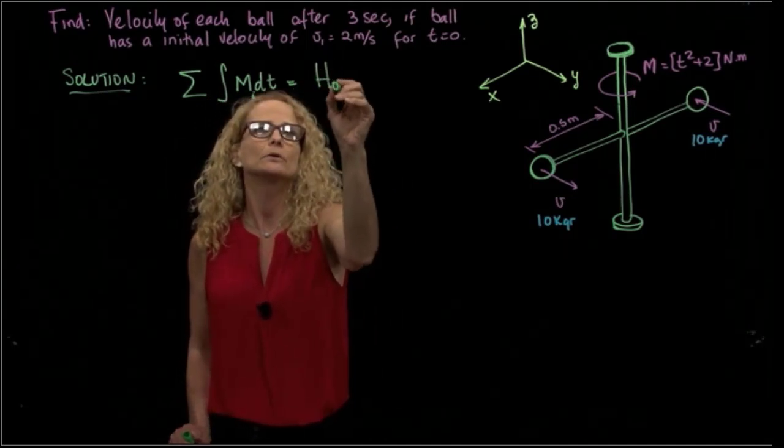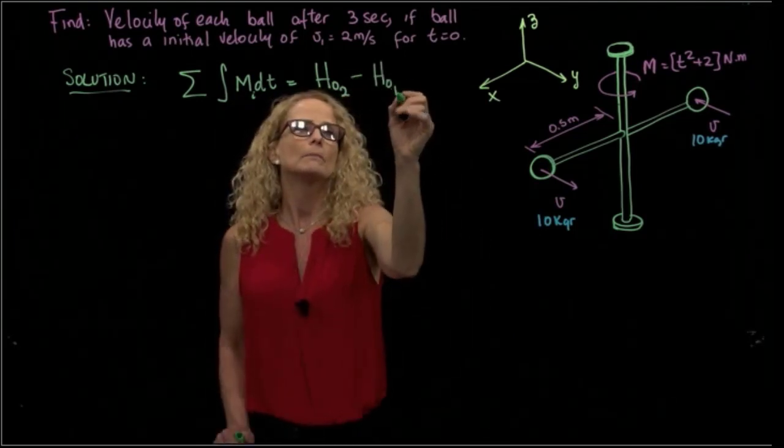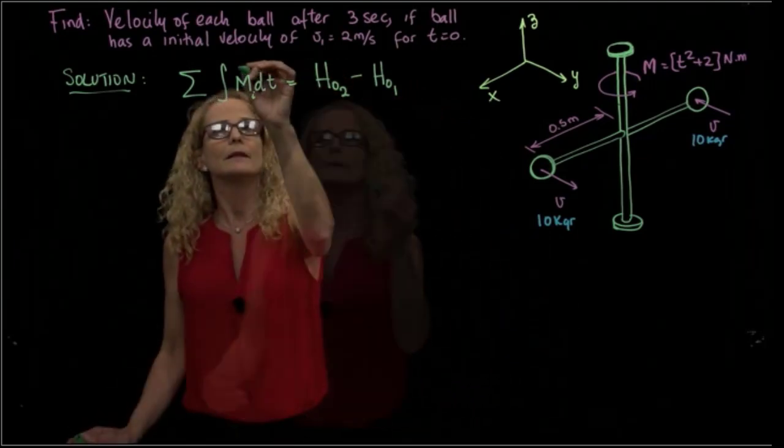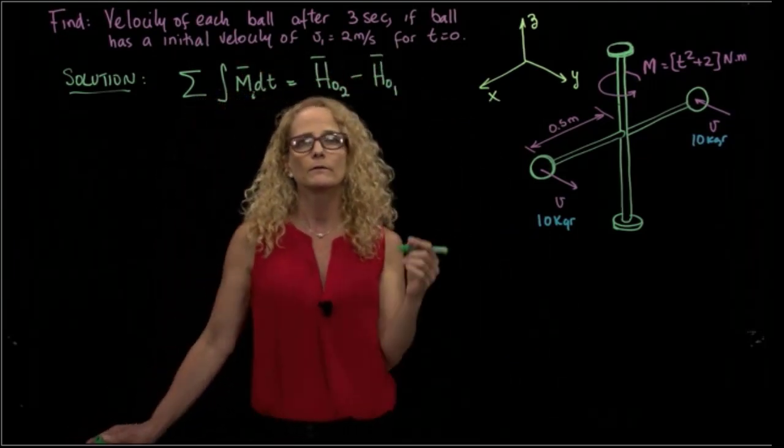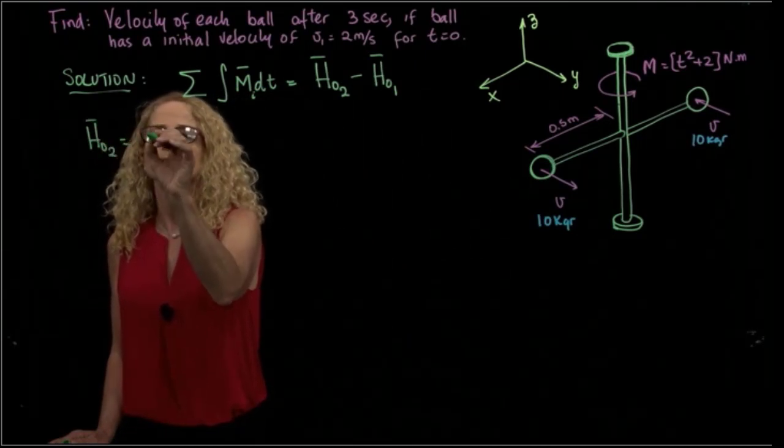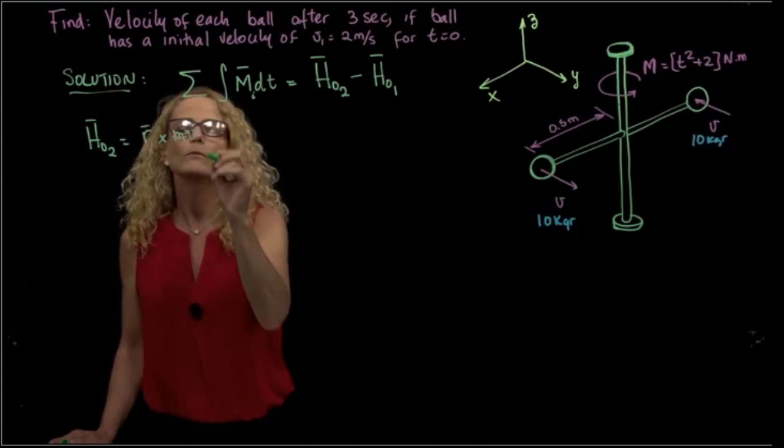the difference between the angular momentum in the second position minus the angular momentum in the first position. That is a vectorial function, and the definition of angular momentum is the moment of the linear momentum.